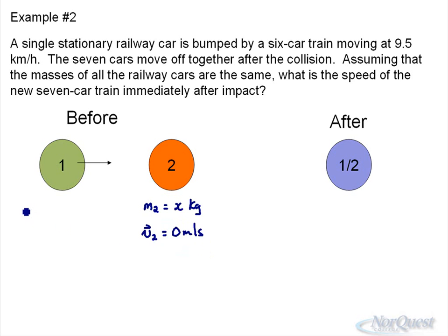It's bumped by a six-car train, all of them same mass, so it'll be six times bigger, 6x kilograms, and its velocity is 9.5 kilometers an hour.